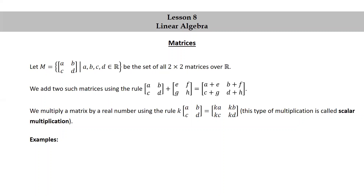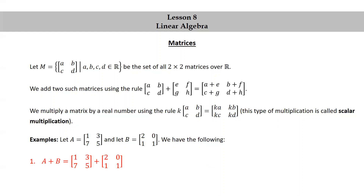Let's look at some examples. Let A be the matrix [1, 3; 7, 5] and let B be the matrix [2, 0; 1, 1]. A + B equals [1, 3; 7, 5] + [2, 0; 1, 1]. We add entry by entry to get [1+2, 3+0; 7+1, 5+1] which equals [3, 3; 8, 6].